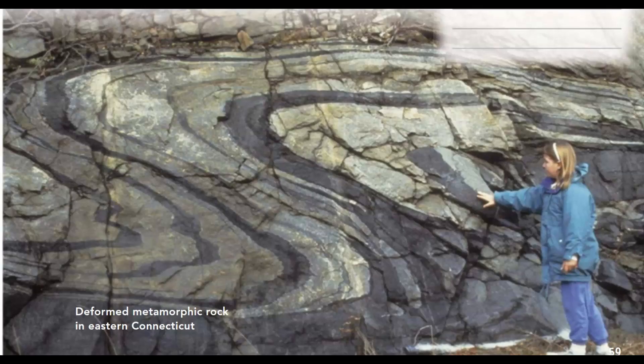Here we have a picture of a deformed metamorphic rock in eastern Connecticut. This rock used to be sedimentary, and now it is metamorphic. The question asks what changed the rock. The rock looks all swirly now. For it to become metamorphic, it had to have great heat and/or pressure. Probably the great heat made the rock less rigid without melting it, and then pressure made the rock go all swirly — like the top of brownies when you swirl the frosting.